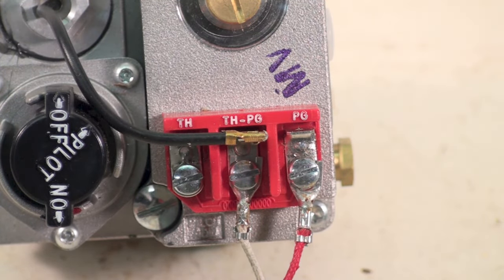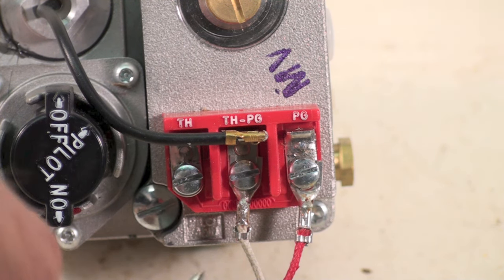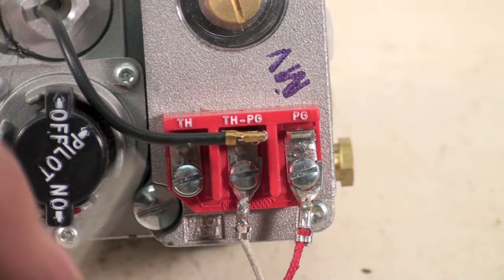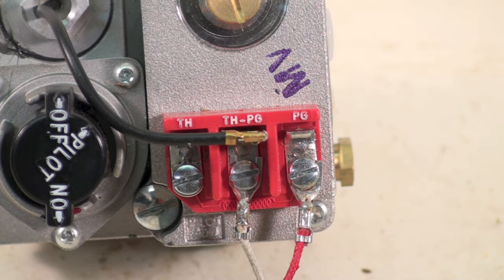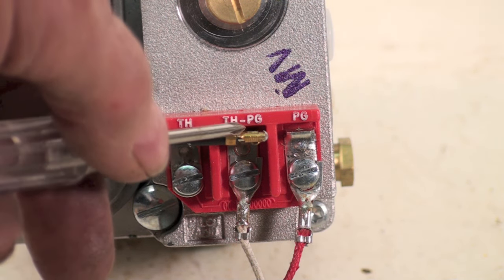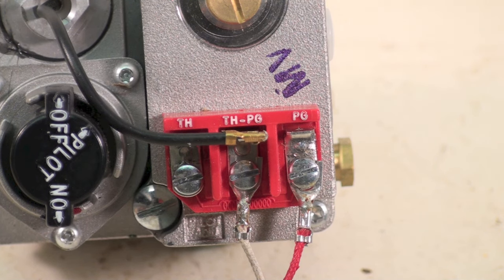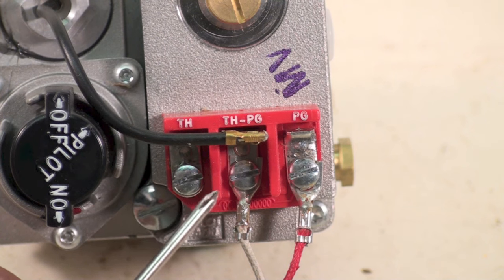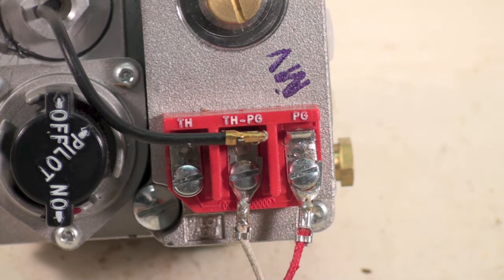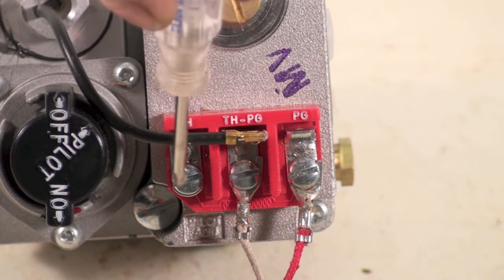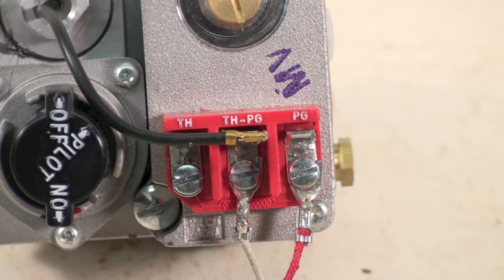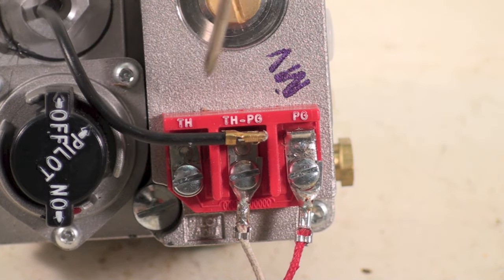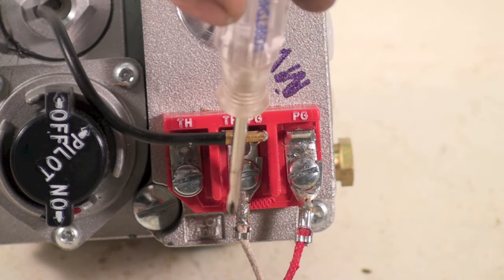The other side of it goes to TH-PG, and then from here it goes up to the thermostat and then comes back to TH. The actual solenoid, the gas valve, is between TH and PG. It's a little squiggly thing between TH and PG. That's a solenoid.